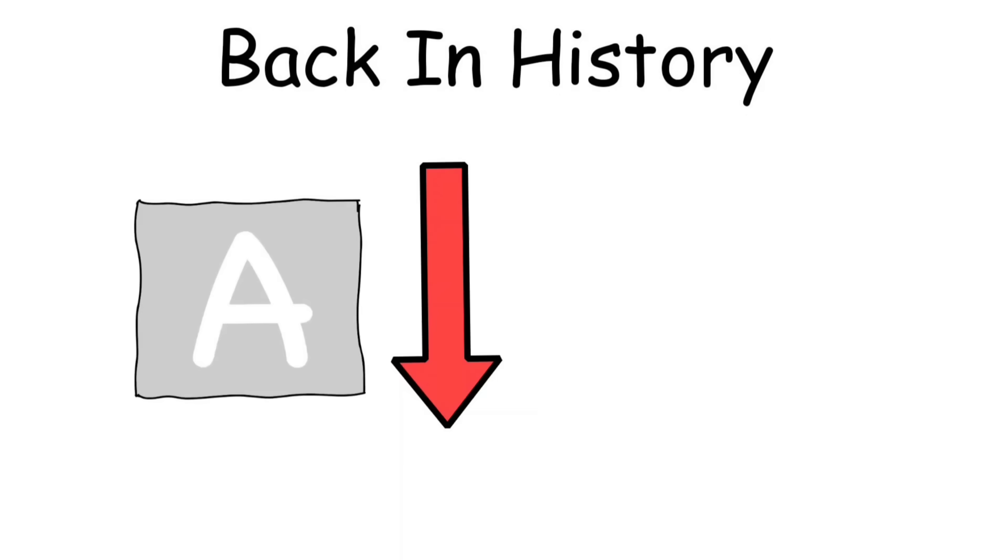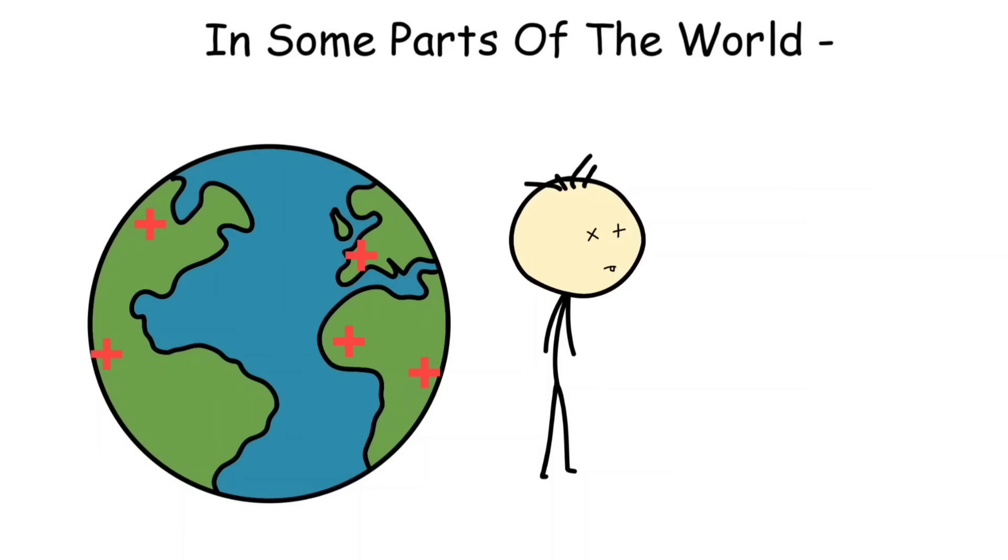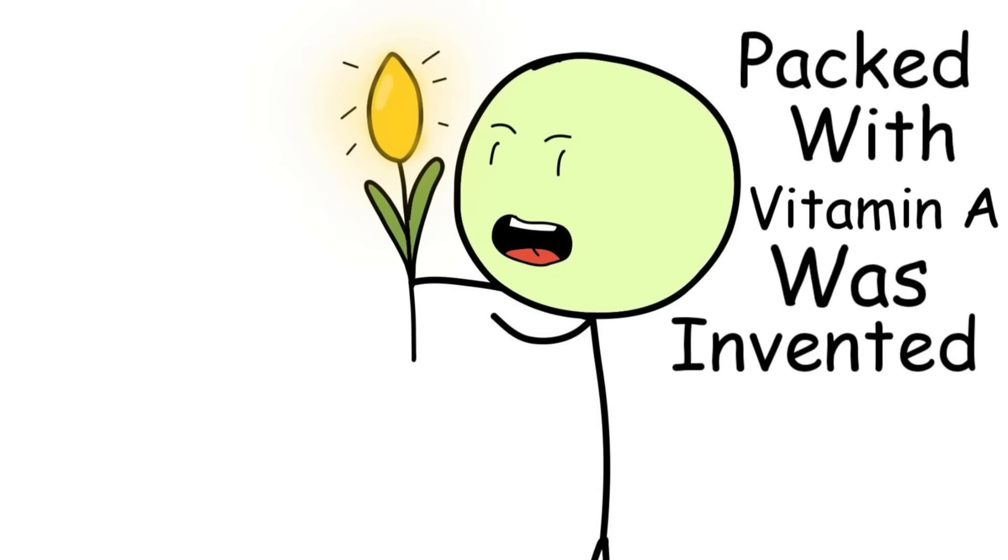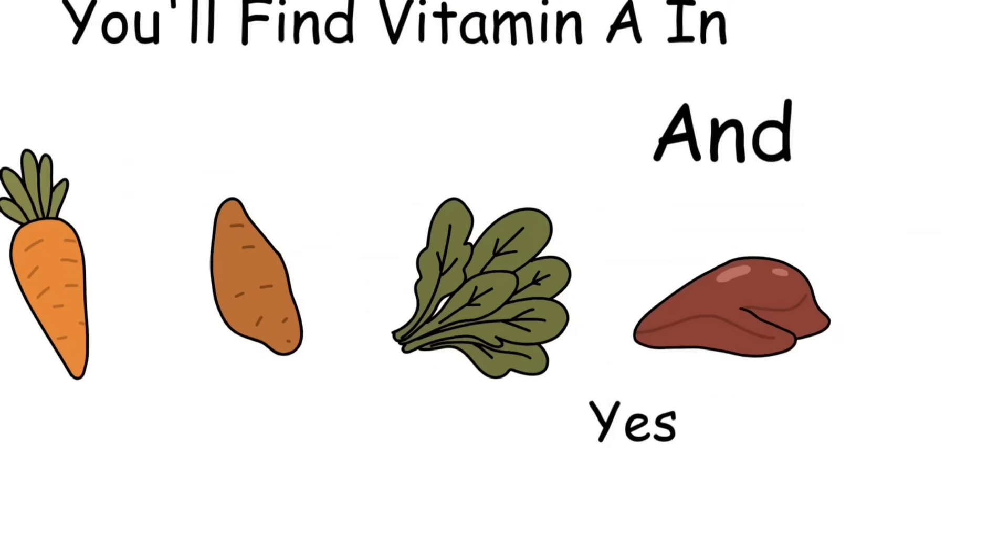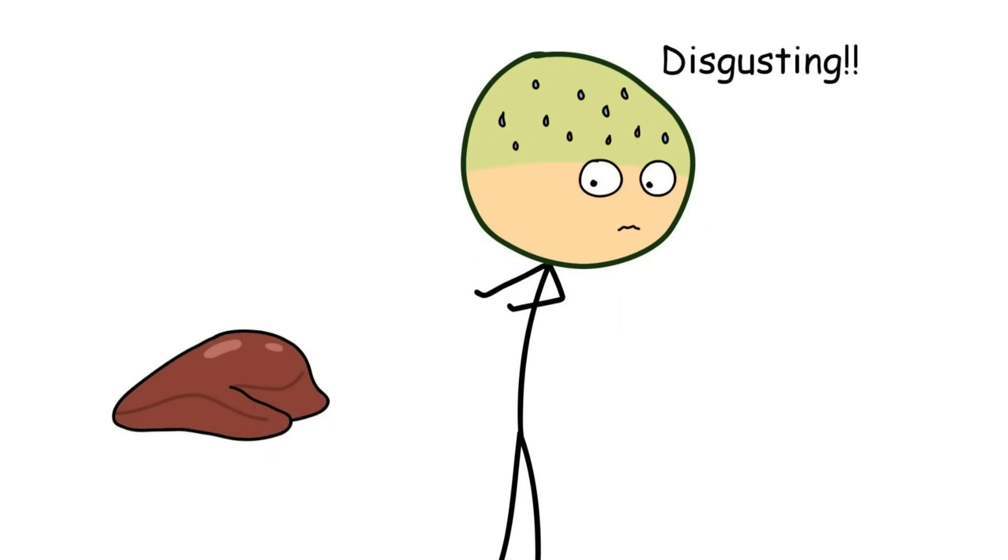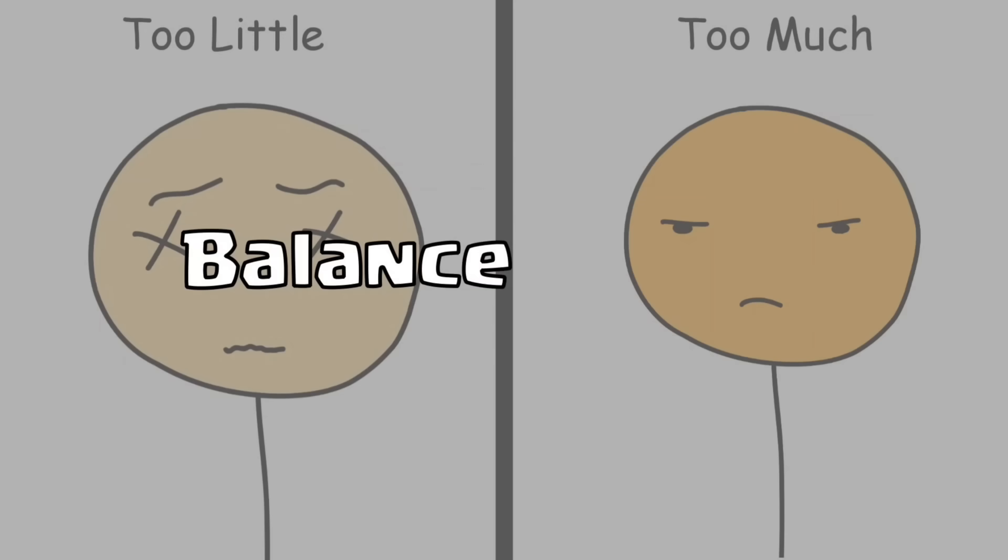Back in history, vitamin A deficiency was a serious problem. In some parts of the world, children literally went blind because their diets lacked it. That's why golden rice, genetically modified rice packed with vitamin A, was invented, sparking debates that still rage today. You'll find vitamin A in foods like carrots, sweet potatoes, spinach, and liver. Yes, liver - the food everyone pretends to enjoy once a year but secretly hates. Too little and your night vision fades. Too much and your skin might turn orange. Balance is key.